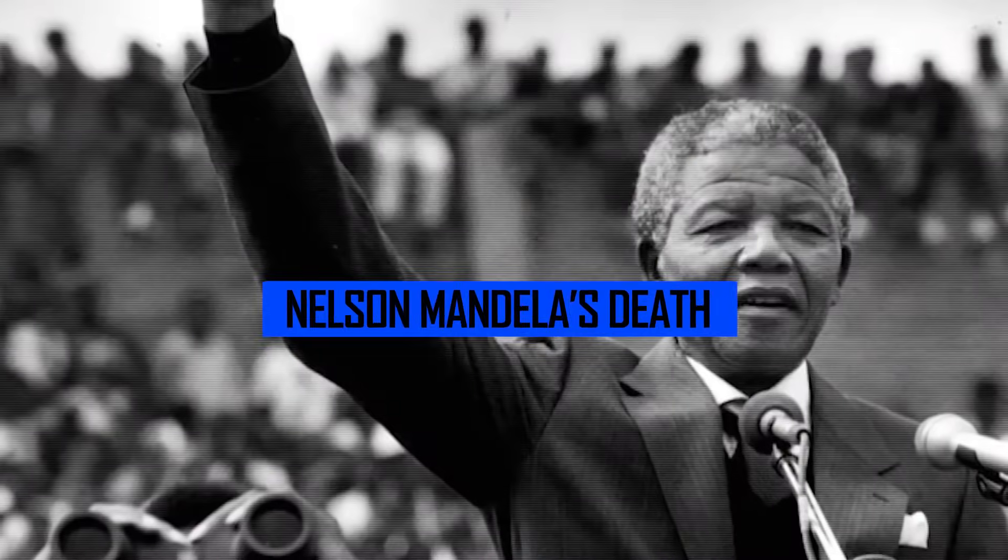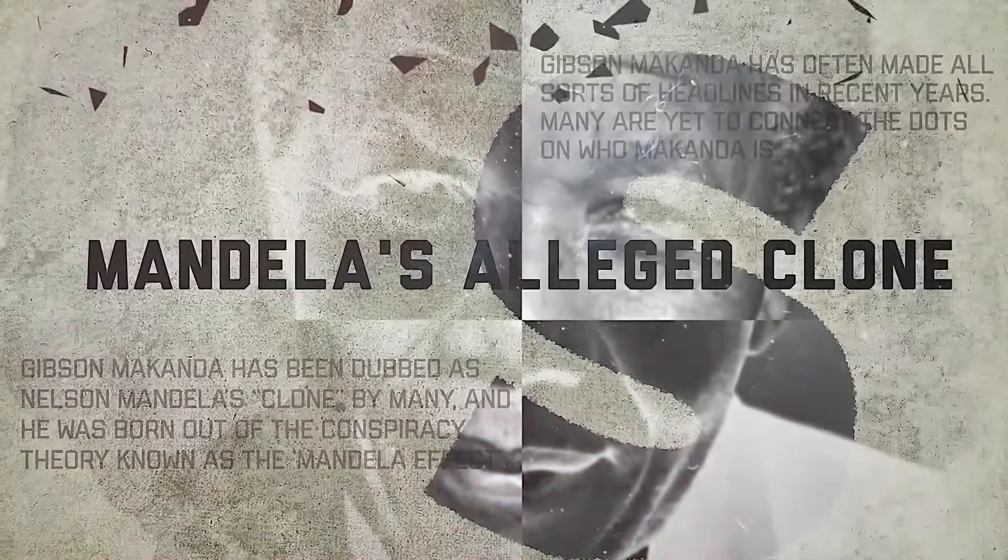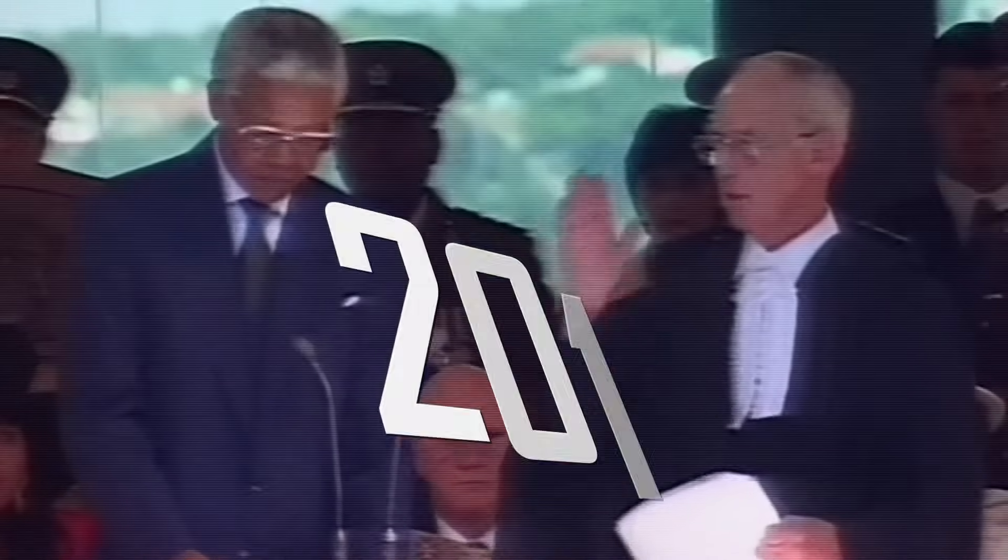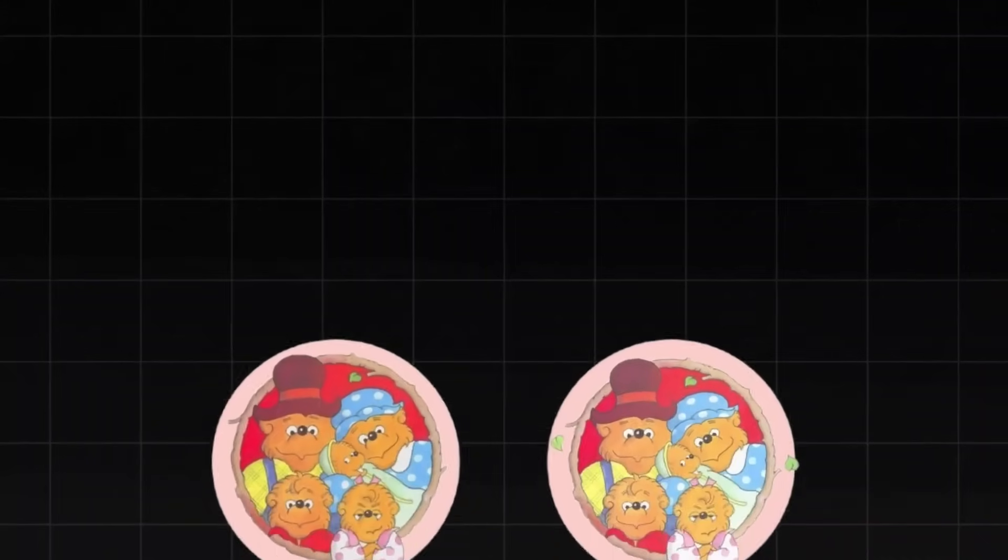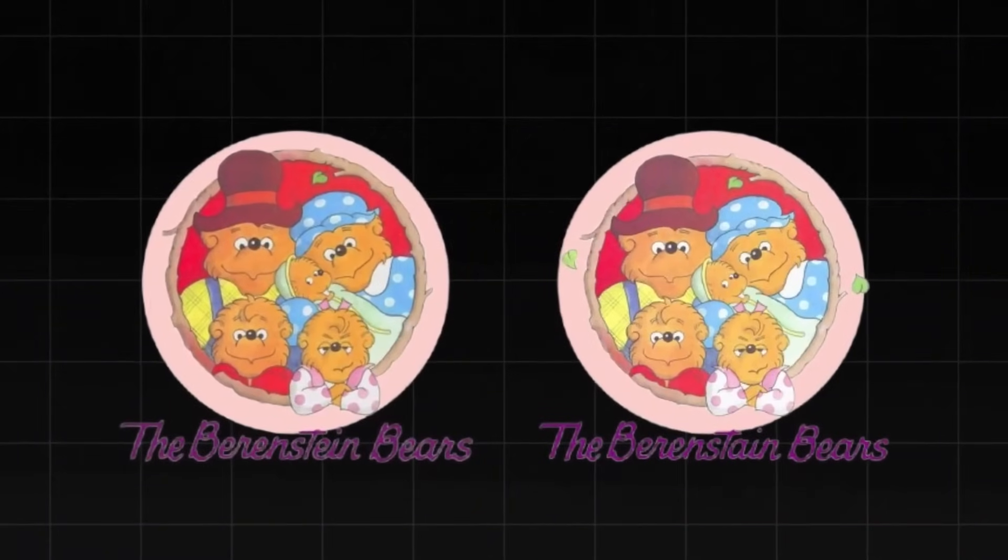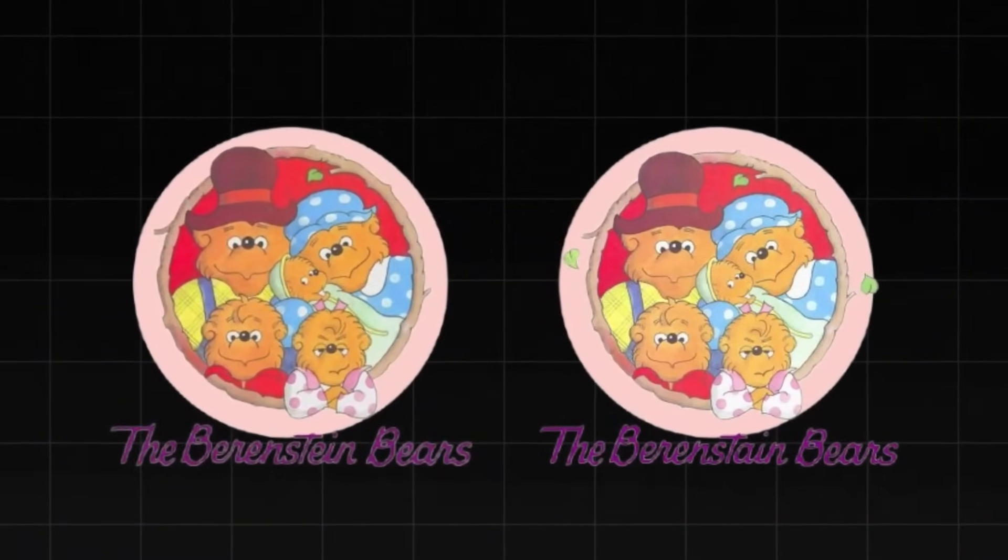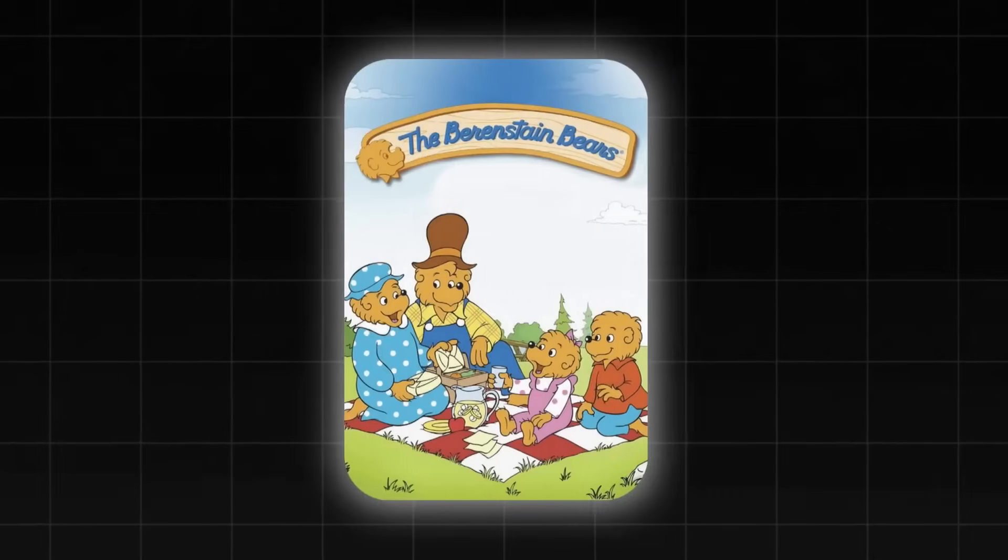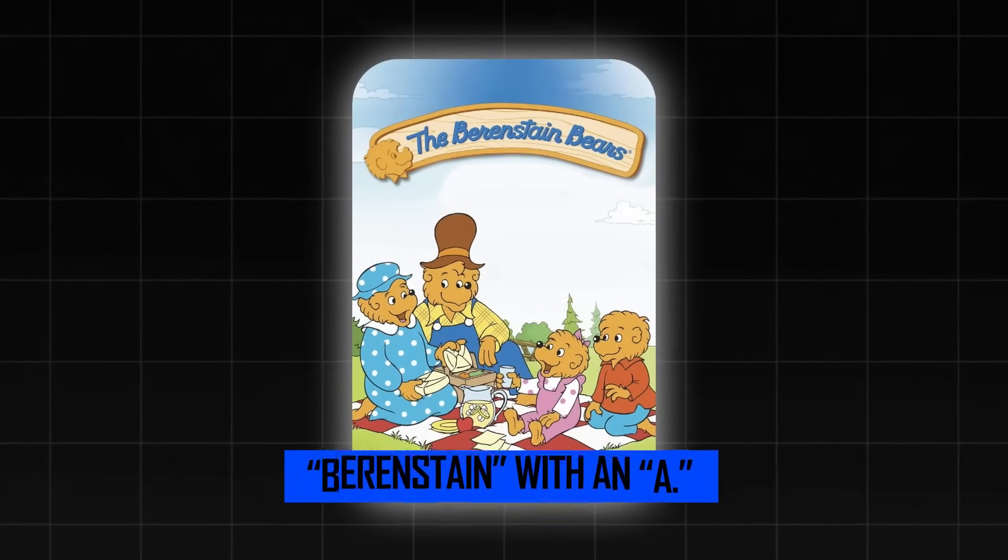Some of the most famous examples include Nelson Mandela's death. Thousands of people distinctly remember news reports of Nelson Mandela dying in the 1980s while in prison. Yet, historical records confirm that he actually passed away in 2013. The Berenstain Bears - many people insist the famous children's book series was always spelled Berenstain. Yet, every official record shows Berenstain with an A.